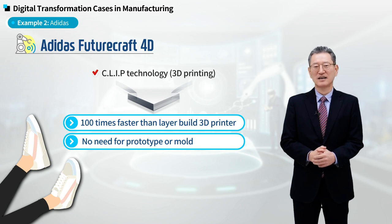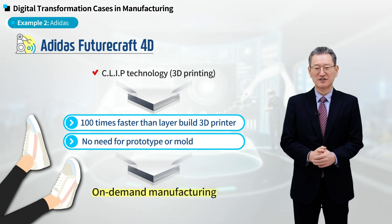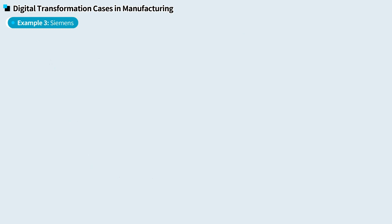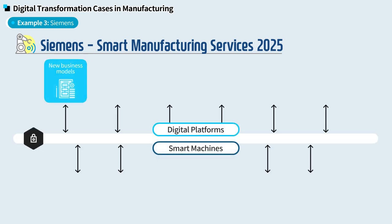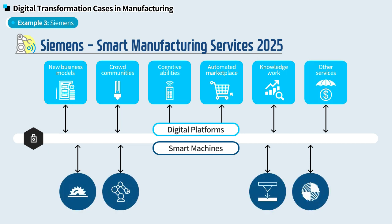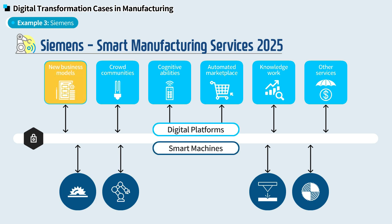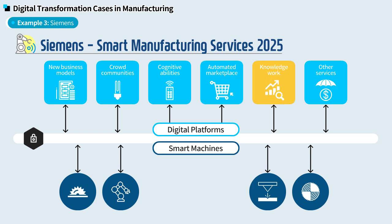This way of jogging shoe making can be defined as manufacturing on demand. The third example is Siemens. I'd like to introduce two things regarding the Siemens case. The first is their vision of digital transformation. As you can see in the picture, Siemens portrays smart manufacturing service in the form of digital platforms. The platform proposed by Siemens connects various services and smart machines. Services include new business models such as production capacity trade as manufacturing service, manufacturing data trade, crowd communities for manufacturing innovations, cognitive abilities to support remote control, automated marketplace to sell products and services, and various knowledge works and related services.